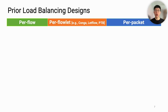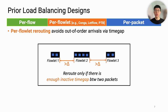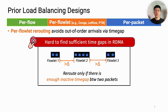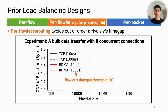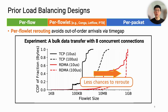To mitigate out-of-order arrivals, many existing works leverage flowlet design. Flowlet makes rerouting only if there is enough time gap between packets, so it effectively reduces the possibility of out-of-order packets. However, the issue is that such sufficient time gaps are hardly found in RDMA traffic. We experimentally checked this by transferring bulk data with eight concurrent connections and measuring the data fraction of a flow with time gap thresholds of 10 microseconds and 100 microseconds. The y-axis shows the CDF of data fraction. We find that while many flowlets appear in TCP, it's hard to find flowlets in RDMA.